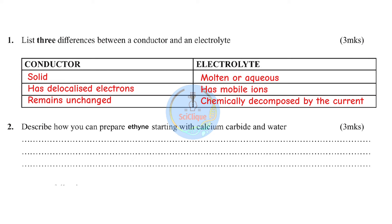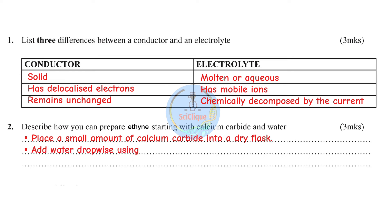Question two: describe how you can prepare ethyne starting with calcium carbide and water. Ethyne can be prepared from the reaction of water on calcium carbide. Place a small amount of calcium carbide into a dry flask. Add water dropwise using a dropping funnel. Lastly, collect ethyne using the over-water method.